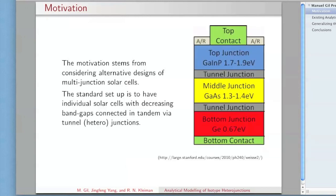If you look at the standard setup for these cells, you're going to have the cells put together in tandem through tunnel junctions, and you're going to have decreasing band gaps as you go from top to bottom. But one issue with this setup is they usually have to use very expensive germanium substrates.